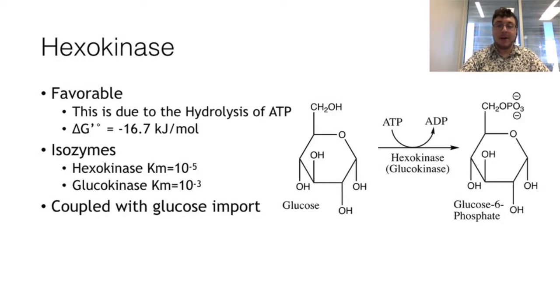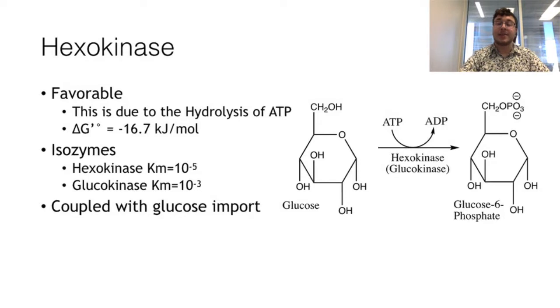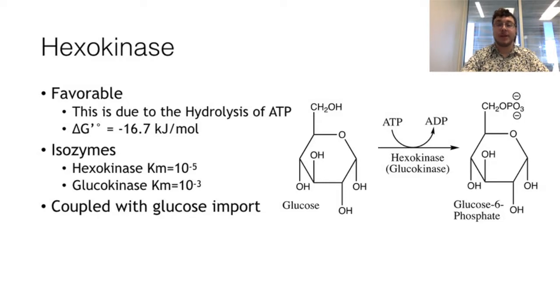Having a lower affinity for glucose in the liver allows glucose to leave and go to tissues which rely heavily on glucose metabolism, like muscles. An additional mechanism is that as glucose enters the cell, hexokinase phosphorylates it almost immediately so that glucose does not leave the cell. Glucose-6-phosphate can't leave cells, but glucose can through different transporters.